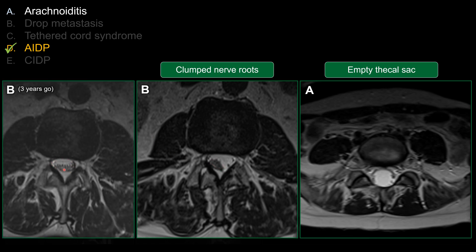This is the same patient about three years ago — you can see back then it was normal, with nerve roots evenly distributed throughout the thecal sac and free floating. Three years later, the nerve roots have clumped together, presenting with arachnoiditis. In this different patient, this is an empty thecal sac. There is also a rare third type where the thecal sac and nerve roots are clumped together forming one single mass-like lesion in the central part of the spinal canal — a form I have never seen personally.